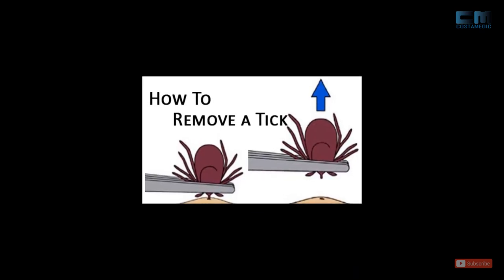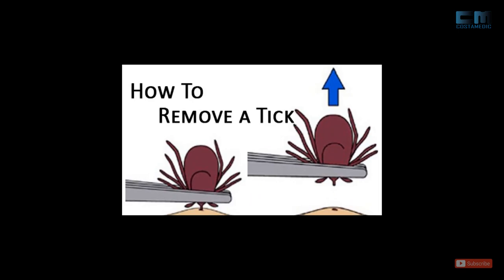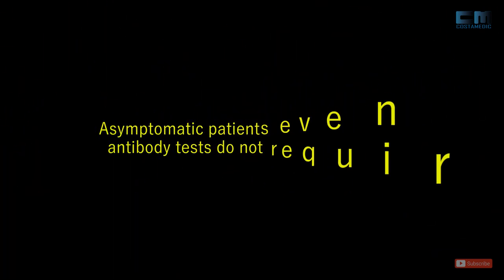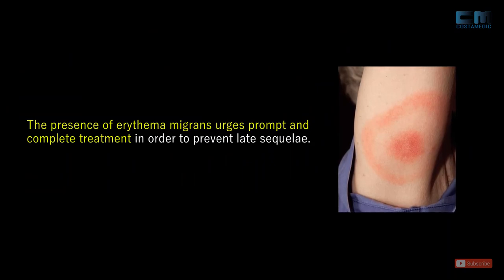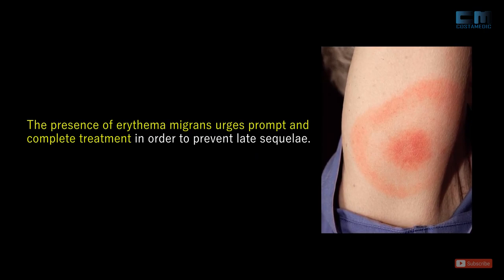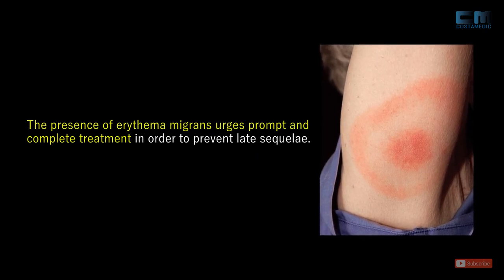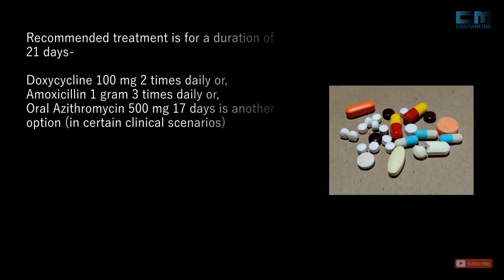Regarding treatment, a tick should be removed from the body as soon as it is found. Fine-tipped tweezers may be used to pull the tick's mouthparts repeatedly until it releases its hold on the host body. It is very important to know that asymptomatic patients, even with positive antibody tests, do not require treatment. However, the presence of erythema migrans urges prompt and complete treatment in order to prevent late sequelae. The currently recommended treatment protocols are doxycycline 100 mg twice daily for 21 days, or amoxicillin 1 g thrice daily for 21 days.